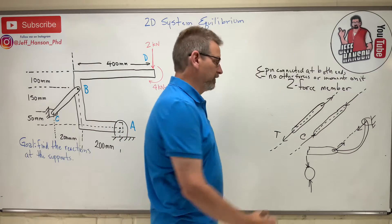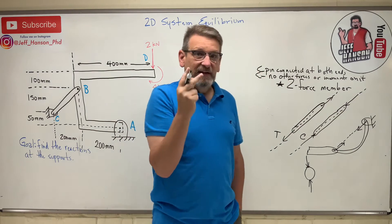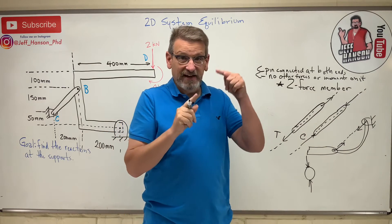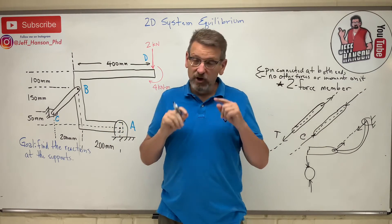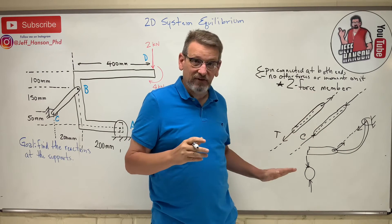So two-force members in compression are pushing on you. Two-force members in tension are pulling on you. Two-force member, how do you identify them? Here's how I tell you to identify them. A two-force member is pin connected at both ends, and number two, there are no other forces or moments on it. There's no forces in the middle of it, none.